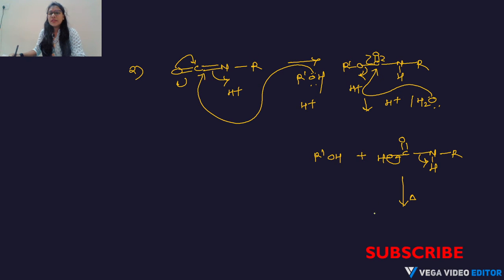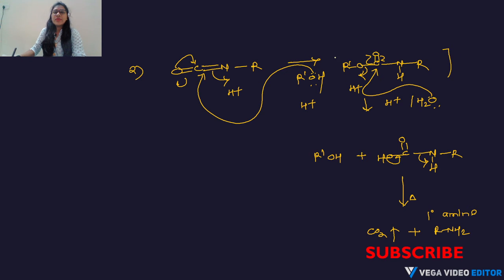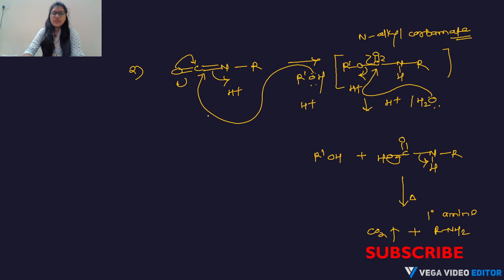Under heating conditions, the alkyl carbamic acid undergoes decarboxylation: CO₂ is released as byproduct and the primary amine is the product. The intermediate in this route is called an alkyl carbamide (since it has an ester group, the suffix is '-ate').